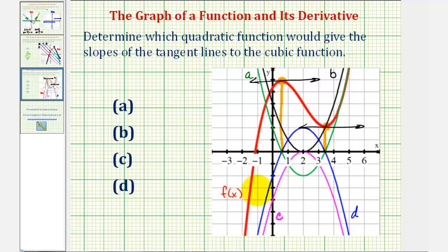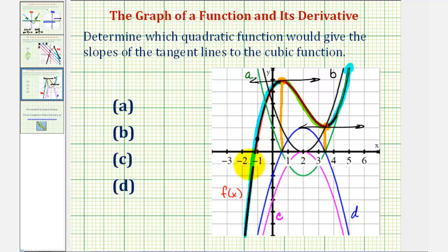Now let's consider the function on this interval where it is increasing or going uphill from left to right, then on this interval where the function is going downhill or decreasing, and then again on this interval where the function is increasing. On the interval where the function is increasing, all the tangent lines would have a positive slope. For example, if we sketch a tangent line at a point here, notice how the slope of this line is positive, which would be true for any point on this interval. Because the slope of the tangent lines are positive, the function values of the quadratic function giving these slopes must also be positive on this interval.